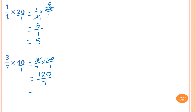So what I need to do is write it as a mixed numeral. So 7 goes into 12 once, and the remainder is 12 minus 7: 10 minus 7 is 3, plus 2 is 5. So the remainder is 5, and then it becomes 50. So 7 goes into 50 seven times, because 7 times 7 is 49. So the remainder is 1, giving 1 over 7. So the answer is 17 and 1 over 7.